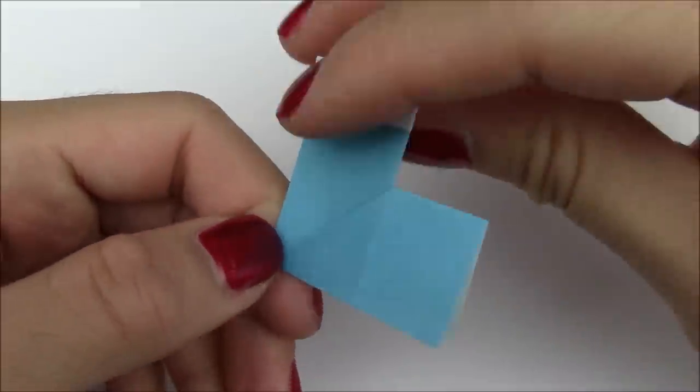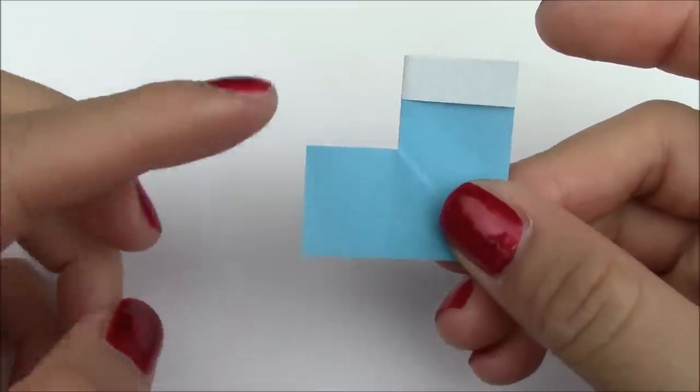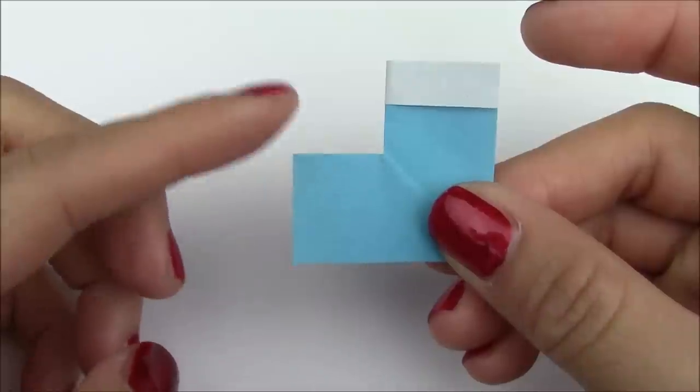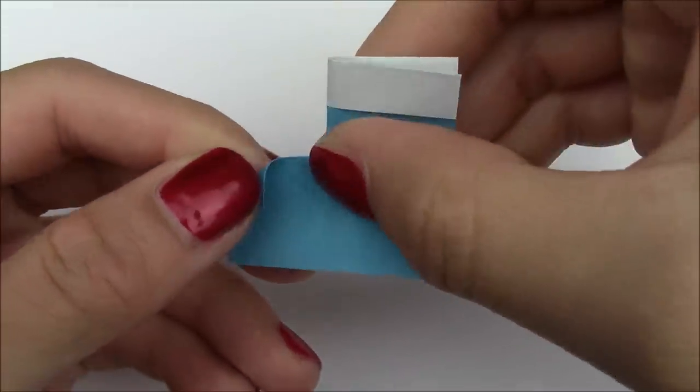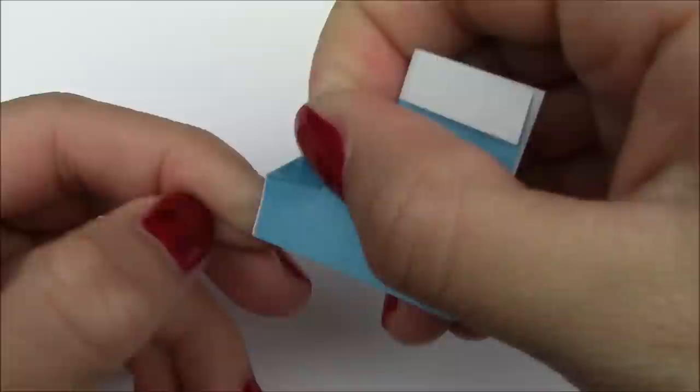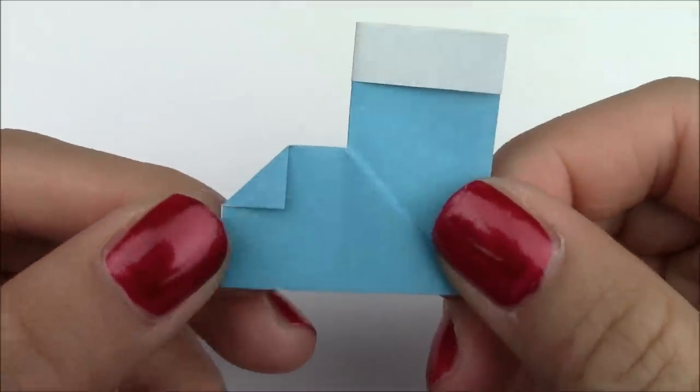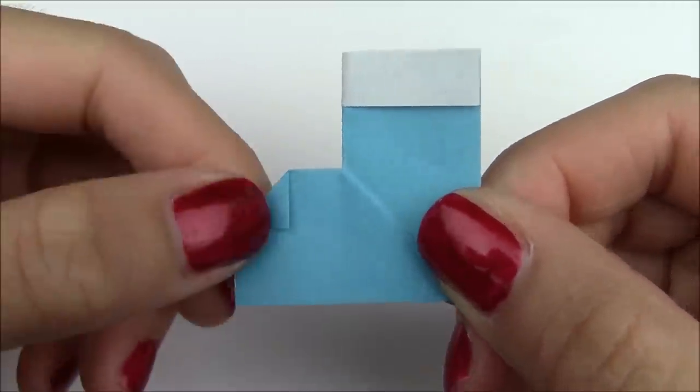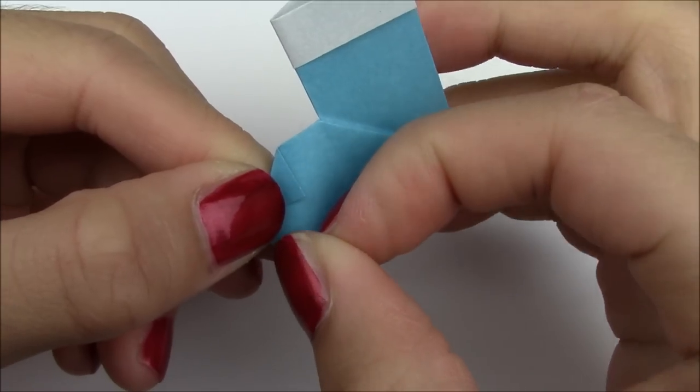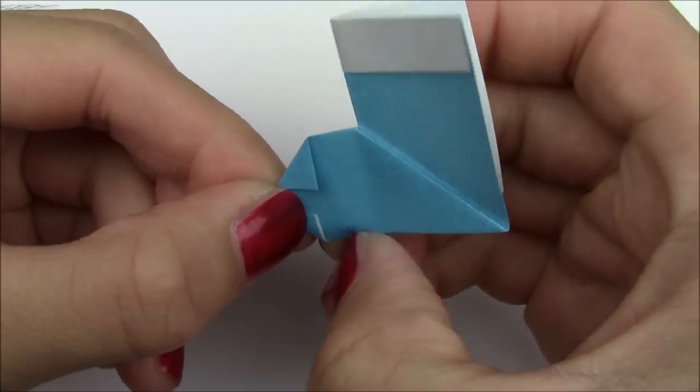So now you notice you have this L shape over here. So now what you want to do is you want to curve this corner over here. So you're just going to fold it down as much or as little as you want. I'm going to fold it down to around this point right here. And then for the very bottom right here I'm going to do the exact same thing. So I'm going to fold up so slightly like this.